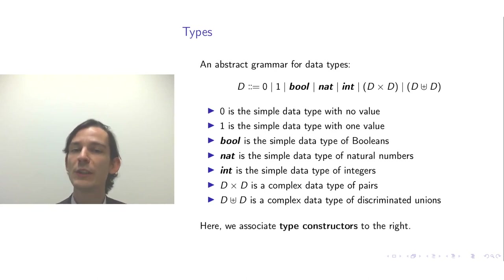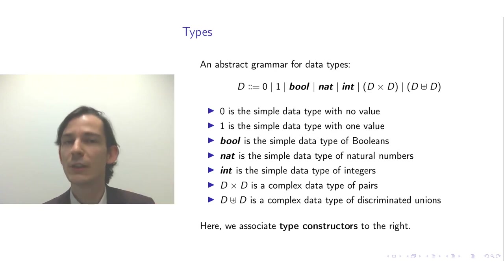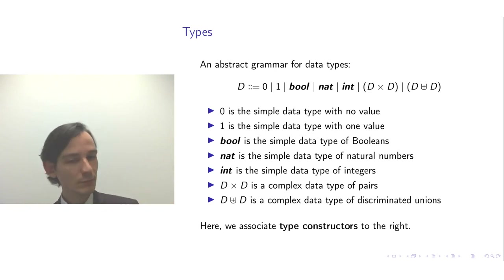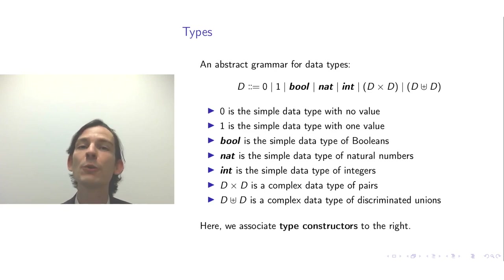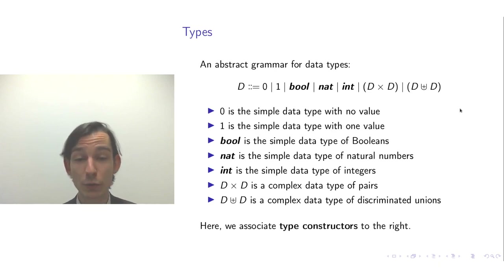Since we're dealing with an abstract grammar, you can remove brackets from these data type expressions. Whenever there is ambiguity with the binary type constructors — the times symbol (×) and the U-plus symbol (⊔) — you associate to the right.